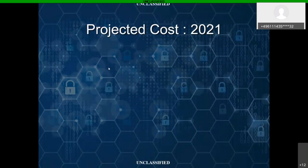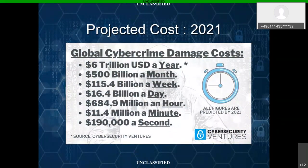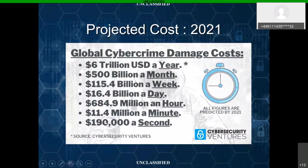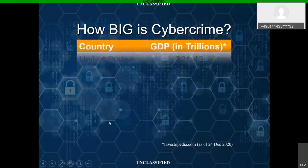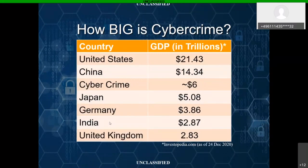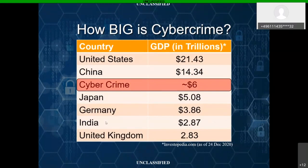Looking at projected costs for 2021, cybersecurity ventures predicts the cost of cybercrime will be about $6 trillion this year. That comes out to $190,000 a second that we are losing to cyber compromise. If we were to equate cybercrime as an independent nation on the global market, they would have $6 trillion of net worth — representing the third wealthiest nation on the planet, only beaten by the US and China. You can see why criminals find this such a profitable market.